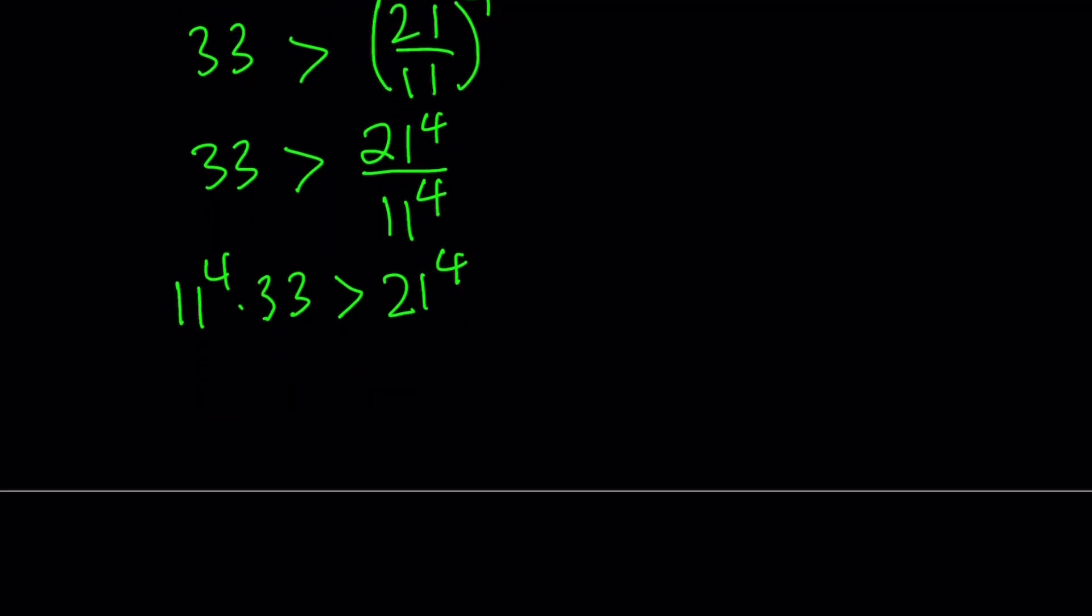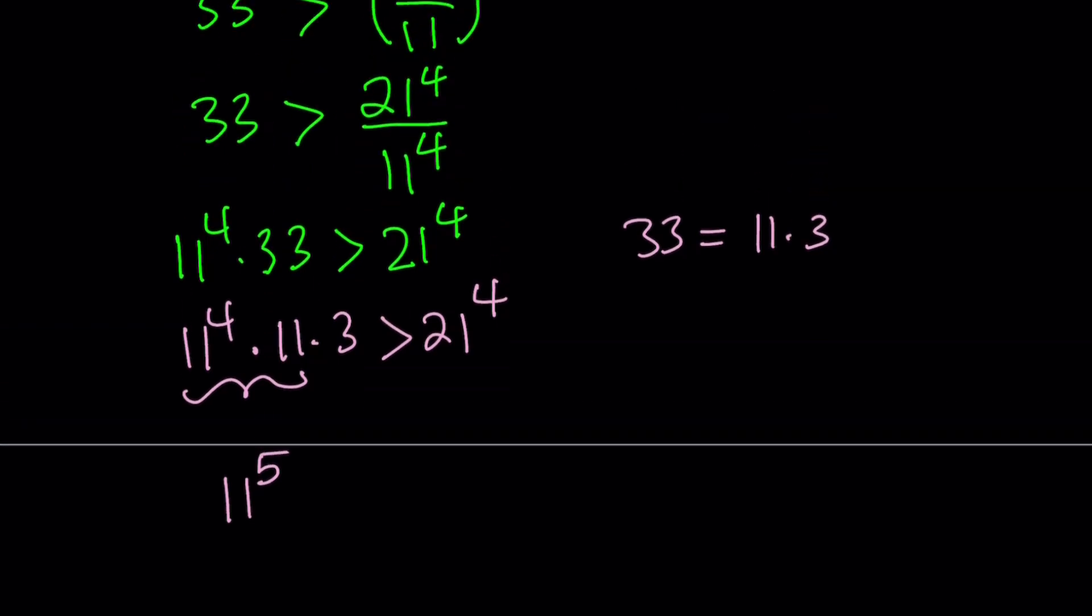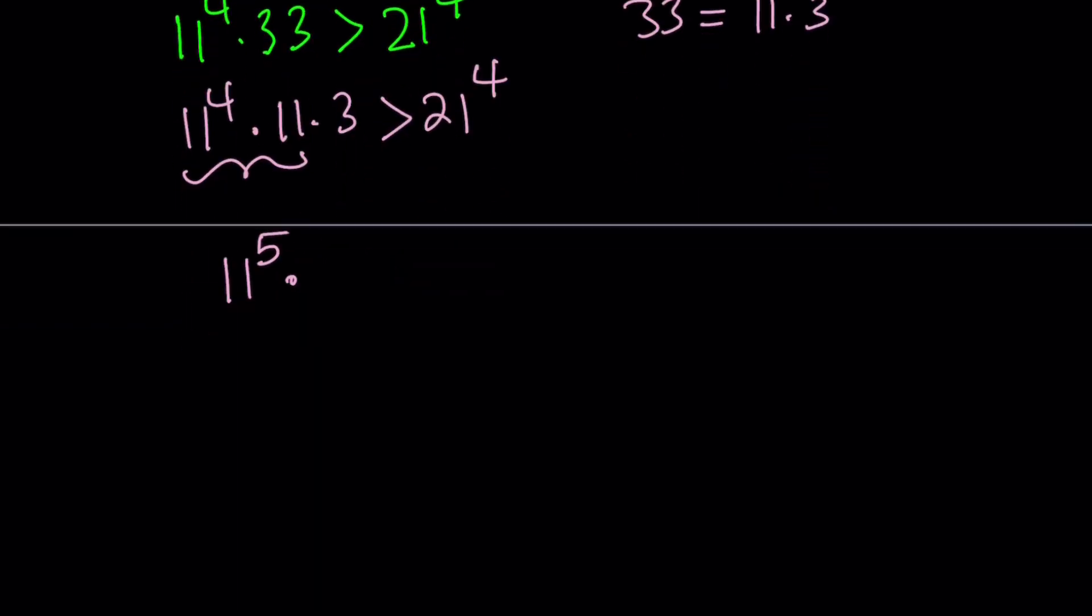Now I want you to note that 33 can be written as 11 times 3. And that's just awesome. So we're going to go ahead and do that. Let's split up 33 into 11 times 3, which is prime factorization. A lot of times we do these kinds of things and then just write the same inequality. Now I want to simplify this. We can combine these two together, 11 to the fourth and 11. That is going to make 11 to the fifth power. But then I have a 3 here, right? So I'm just going to write it as a 3 there, and then that's just going to be greater than 21 to the fourth.